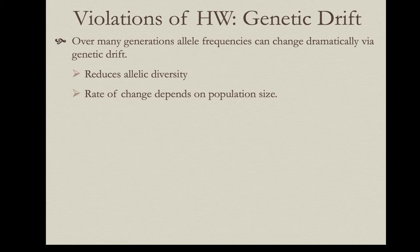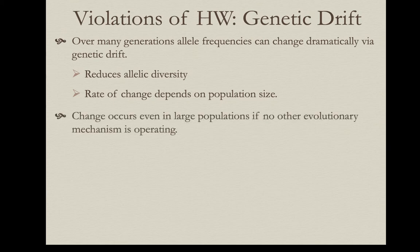The rate of change from generation to generation depends on population size. You'll see more radical changes in allele frequencies generation to generation in small populations. But even in large populations, if there are no other evolutionary mechanisms operating, genetic drift still has the same effect of reducing allelic diversity — the generation-to-generation changes are just more subtle.